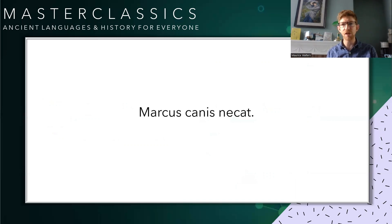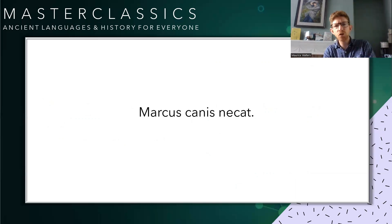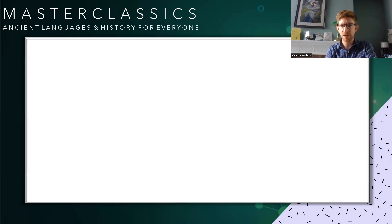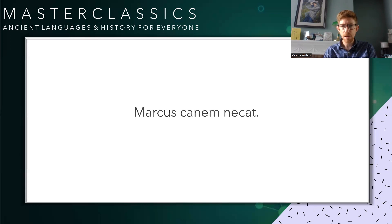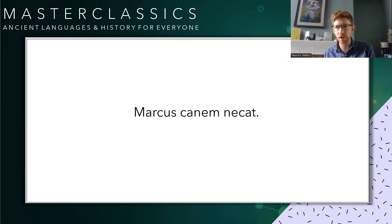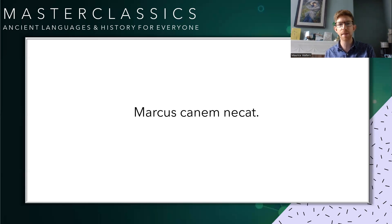Let's look at: marcus canis necat. If neco — a first conjugation verb: neco, necas, necat, necamus, necatis, necant — means 'kill', see if you can translate that sentence. You should have had trouble with that, because we've got two nouns in the nominative. Both marcus and canis appear to be doing the action, so it's impossible to tell who is doing the killing. Let's change it to: marcus canem necat. Hopefully you've got: 'Marcus kills the dog.' It cannot be 'the dog kills Marcus' because of that 'm' ending on canem, which tells us it's in the accusative.